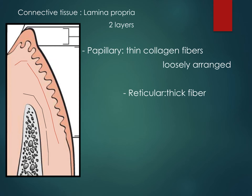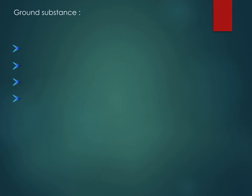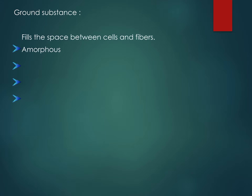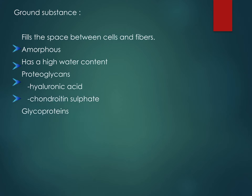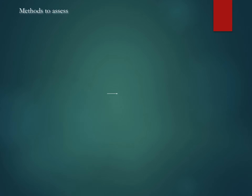The papillary layer has loosely arranged fibers and the reticular layer has thick fibers. Ground substance fills the space between cells and fibers. It is amorphous and has a high water content. It contains proteoglycans, which are the major part of the ground substance — mostly hyaluronic acid and chondroitin sulfate. Glycoproteins are also present, one important component being fibronectin.